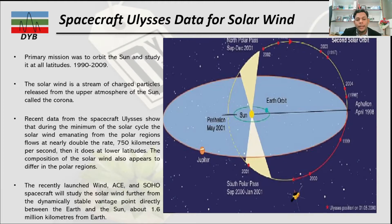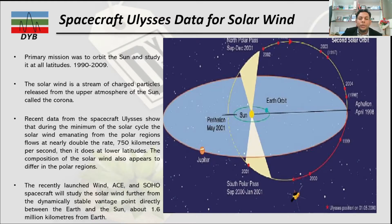The lower latitudes have a lower wind speed, while the higher latitudes have a higher rate of wind speed. The composition of the solar wind also appears to be different in the polar regions — the North Pole and the South Pole have different ranges of solar wind.